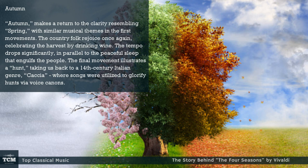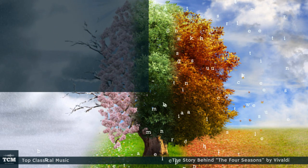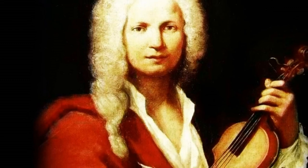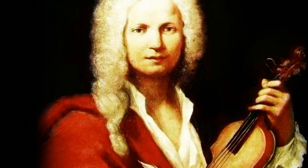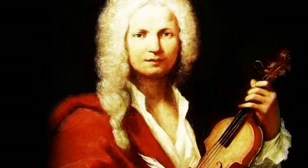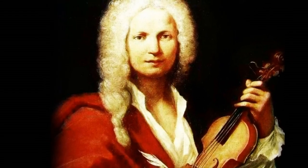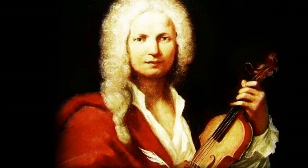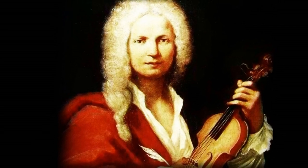Autumn. Autumn makes a return to the clarity resembling spring, with similar musical themes in the first movements. The country folk rejoice once again, celebrating the harvest by drinking wine. The tempo drops significantly, in parallel to the peaceful sleep that engulfs the people. The final movement illustrates a hunt, taking us back to a 14th-century Italian genre, caccia, where songs were utilized to glorify hunts via voice canons.